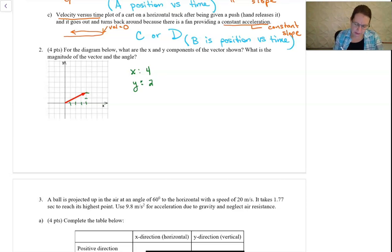Then the magnitude, that's how long this vector is. So we've got something that's four and two. And the question is, what's this side? Usually the hypotenuse is what we call that. So H is equal to the square root of four squared plus two squared. And when I calculate that out, I get about 4.5 units, whatever these units are.